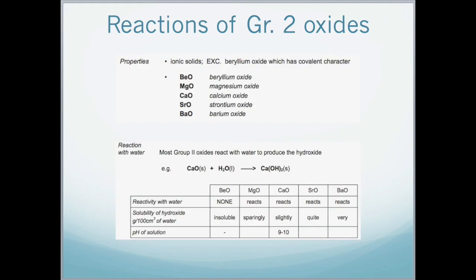Reactions of group 2 oxides. The group 2 oxides are ionic solids, excluding beryllium oxide, which has a covalent character. So we have beryllium oxide, magnesium oxide, calcium oxide, strontium oxide, and barium oxide. If we look from calcium down the group, the oxides will react with water to form the corresponding hydroxide. For example, calcium oxide solid reacting with water goes to calcium hydroxide, which is a solid. Calcium hydroxide has many uses, such as water purification, making whitewash, and plaster.